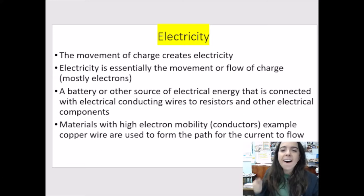Materials with high electron mobility, which means the electrons are free to move around. Something like copper, which is a good conductor of electricity. And the conducting wires also form the pathway for the current to flow.